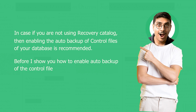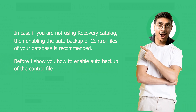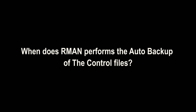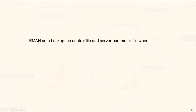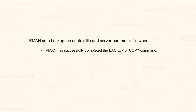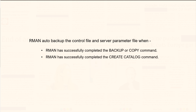Before I show you how to enable auto backup of the control file, let me answer a question: when does RMAN perform the auto backup of the control files? RMAN auto backs up the control file and server parameter file when RMAN has successfully completed a backup or copy command, when RMAN has successfully completed the create catalog command, and when there are any changes to the physical structure of the database.